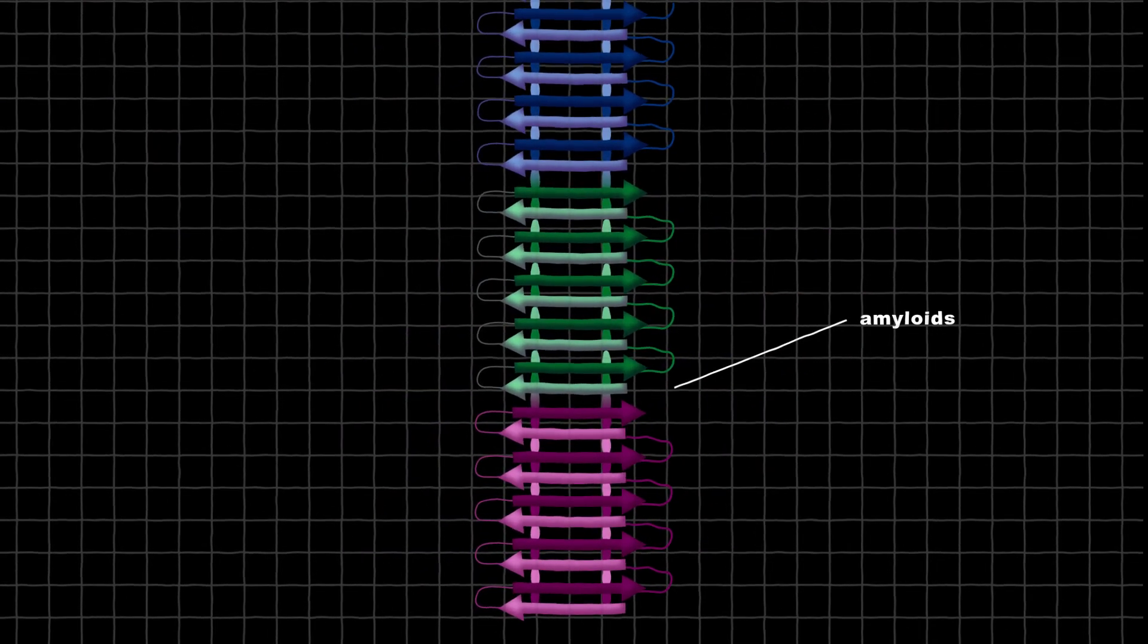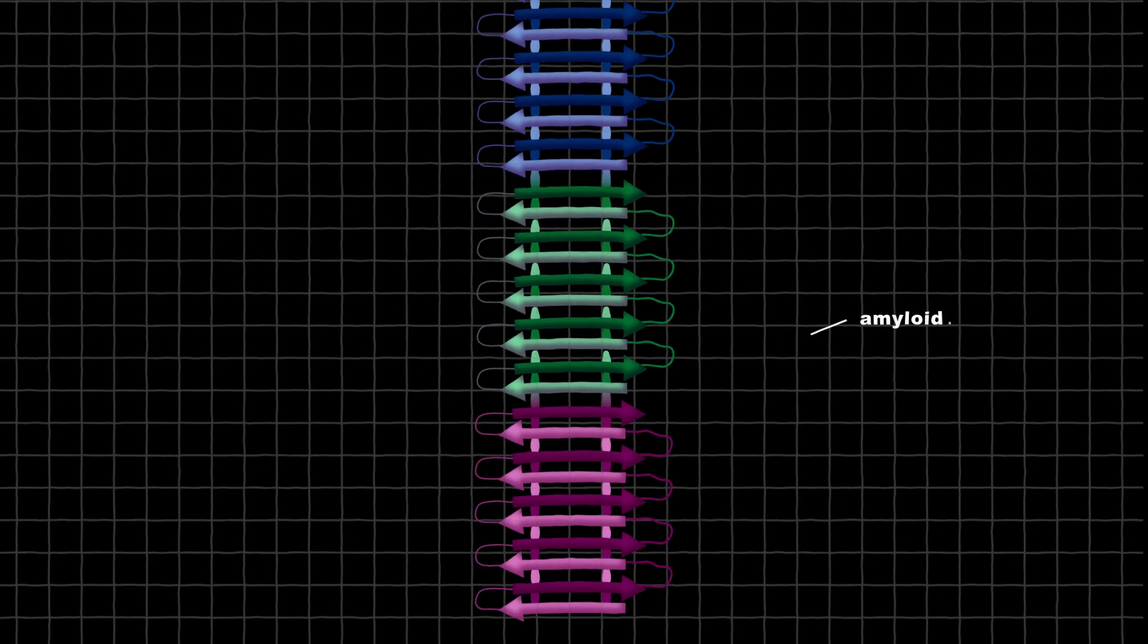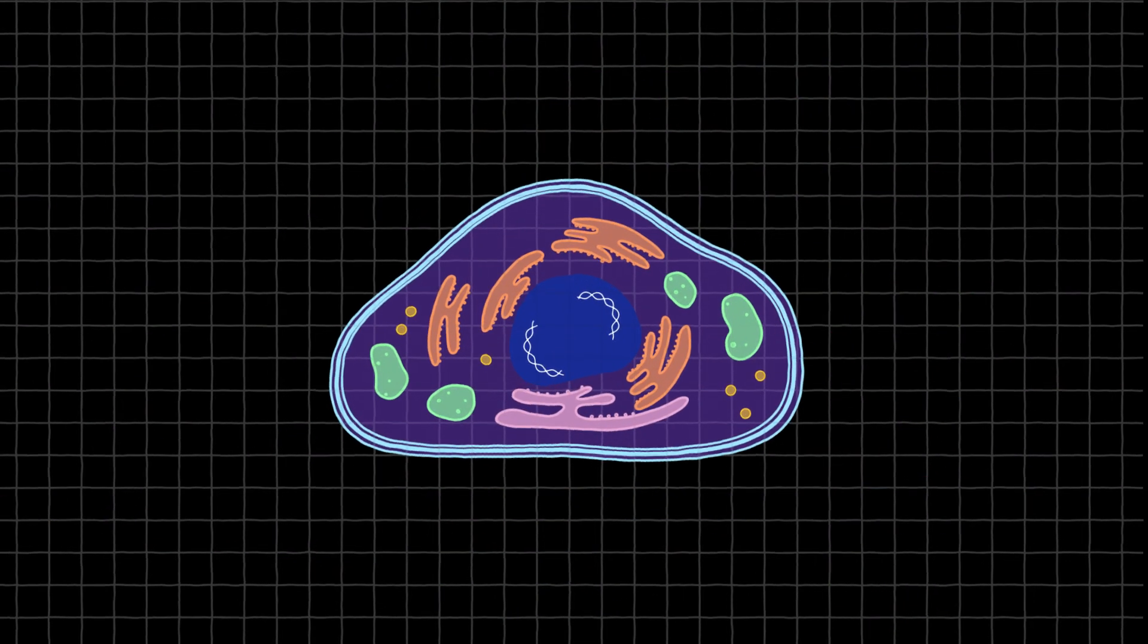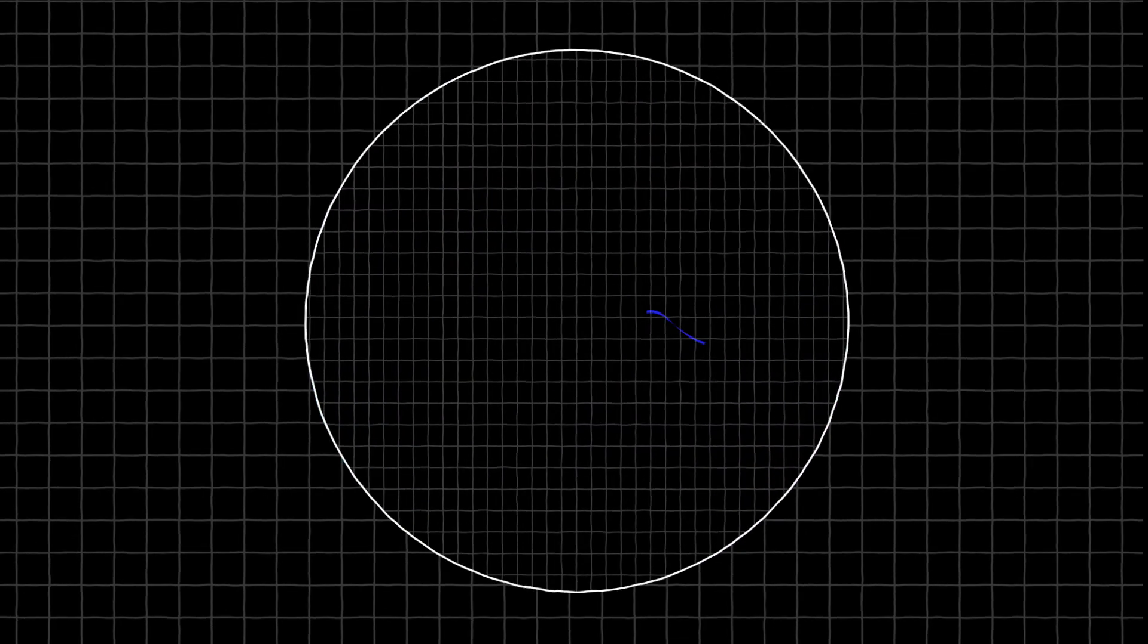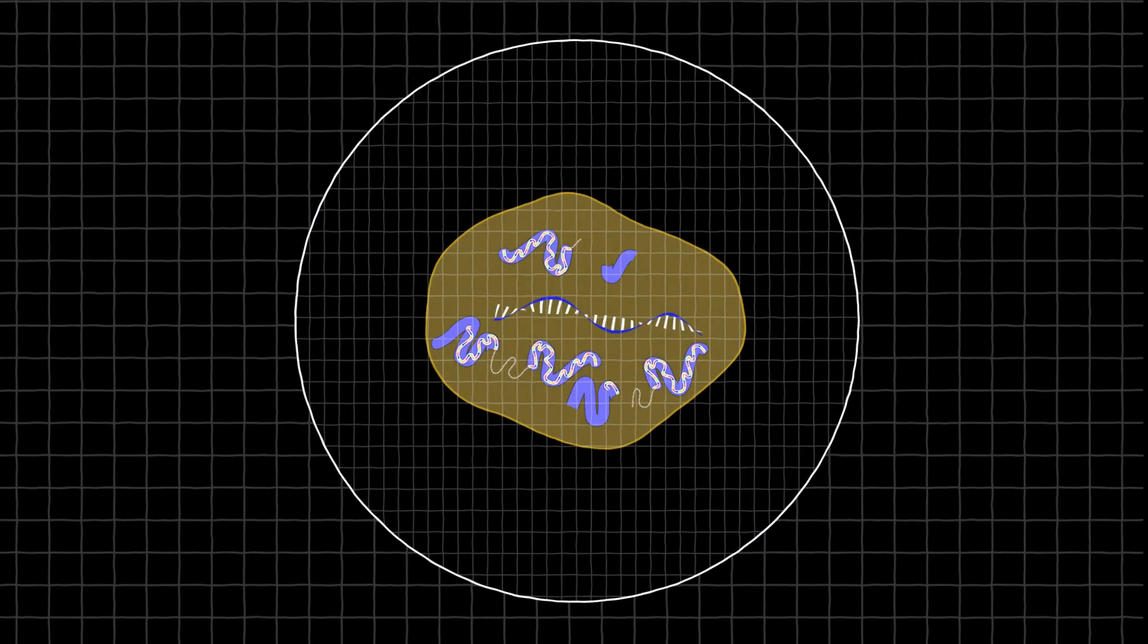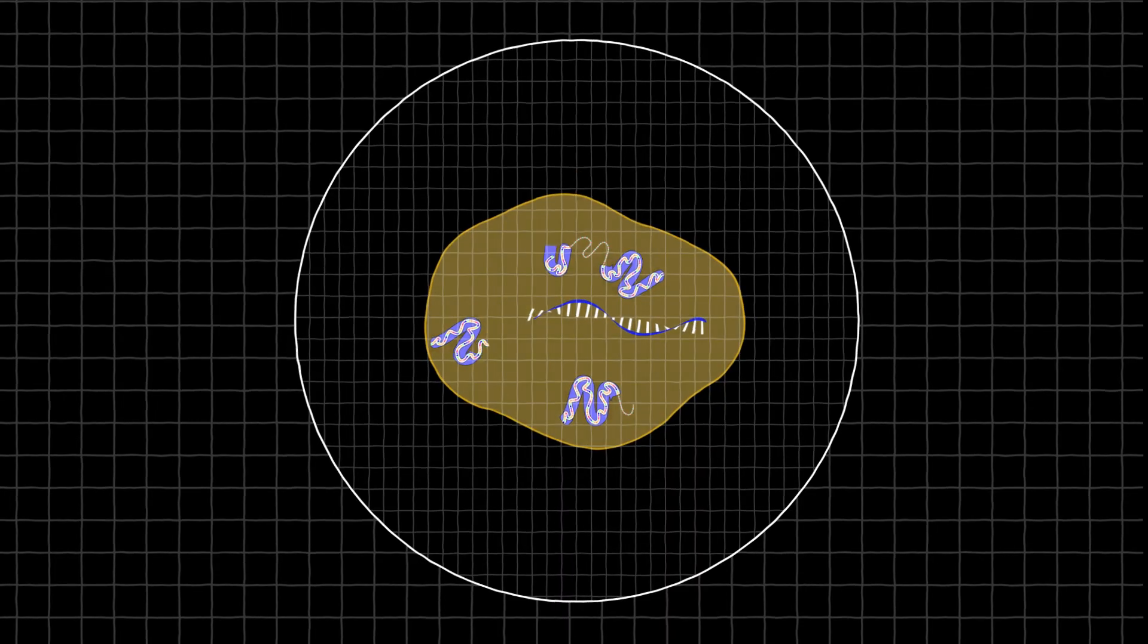These pathological aggregates called amyloids are extremely stable, but inside healthy cells, cross-beta interactions can create less stable, transient structures like RNA granules that assemble and disassemble as needed.